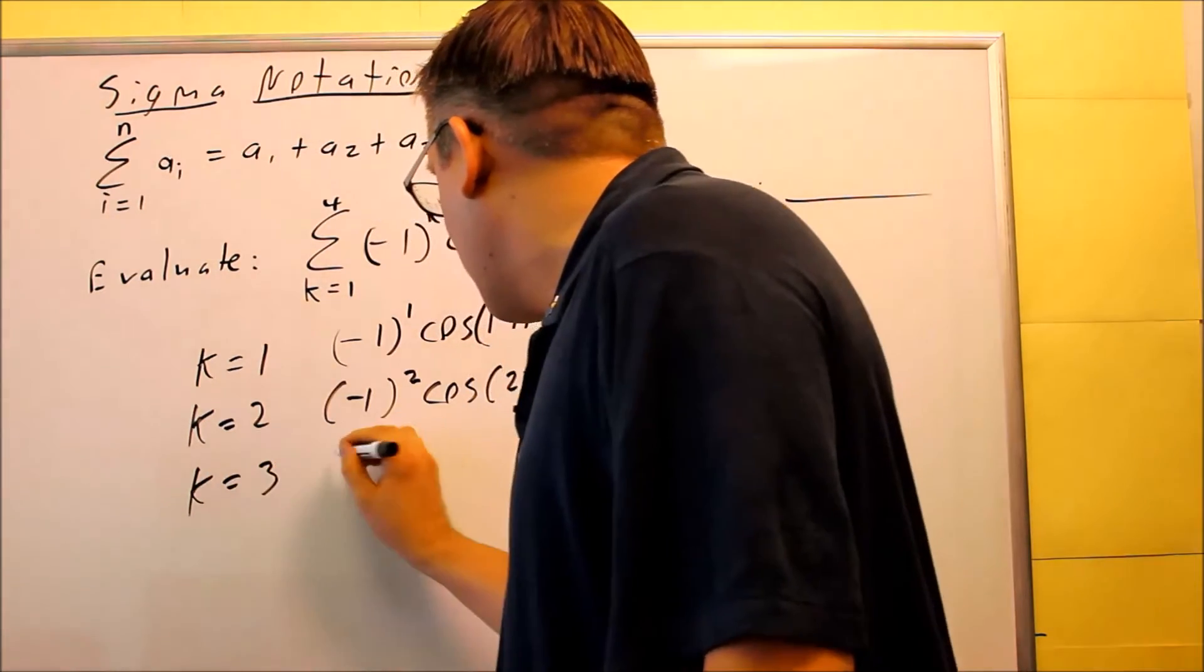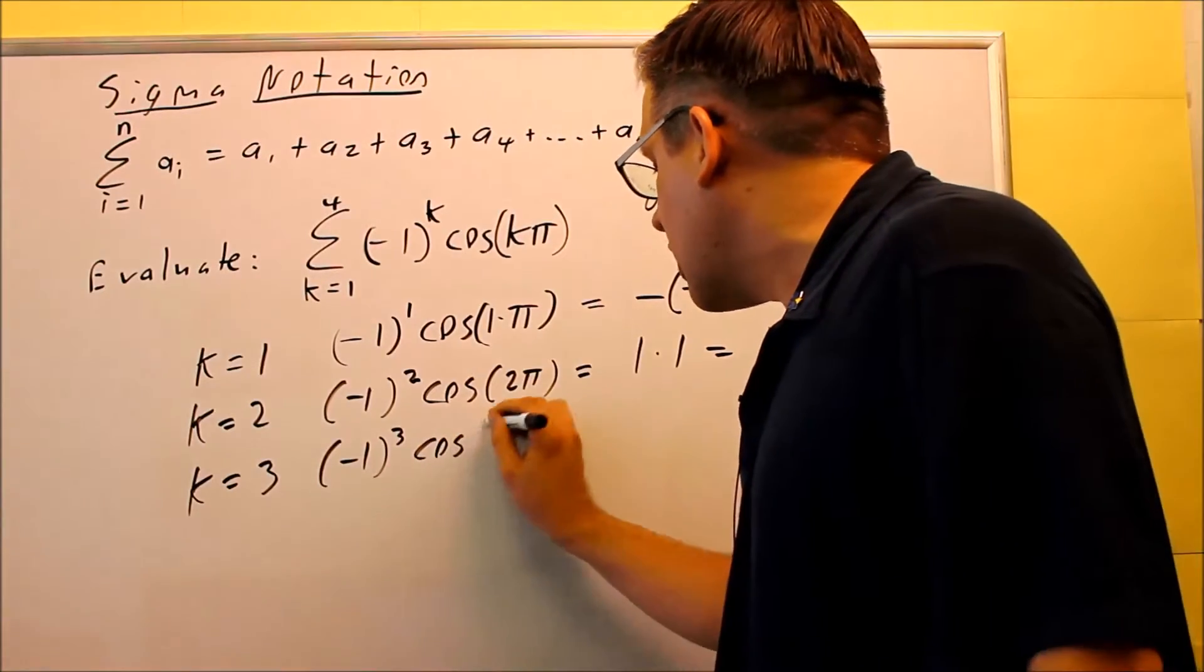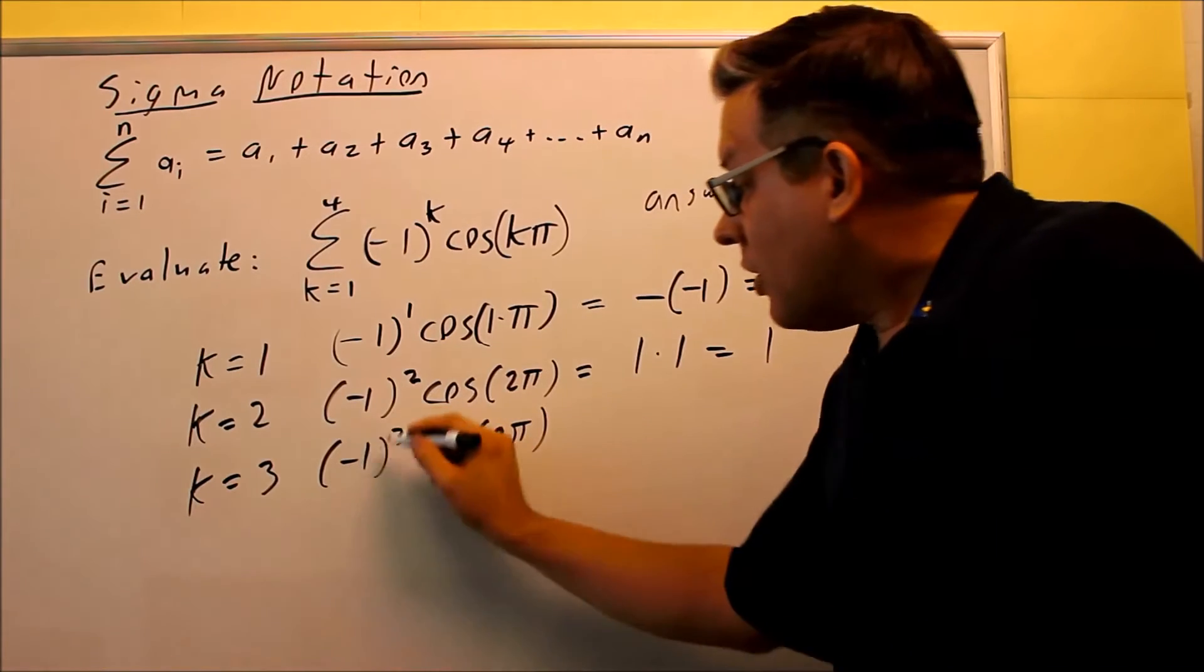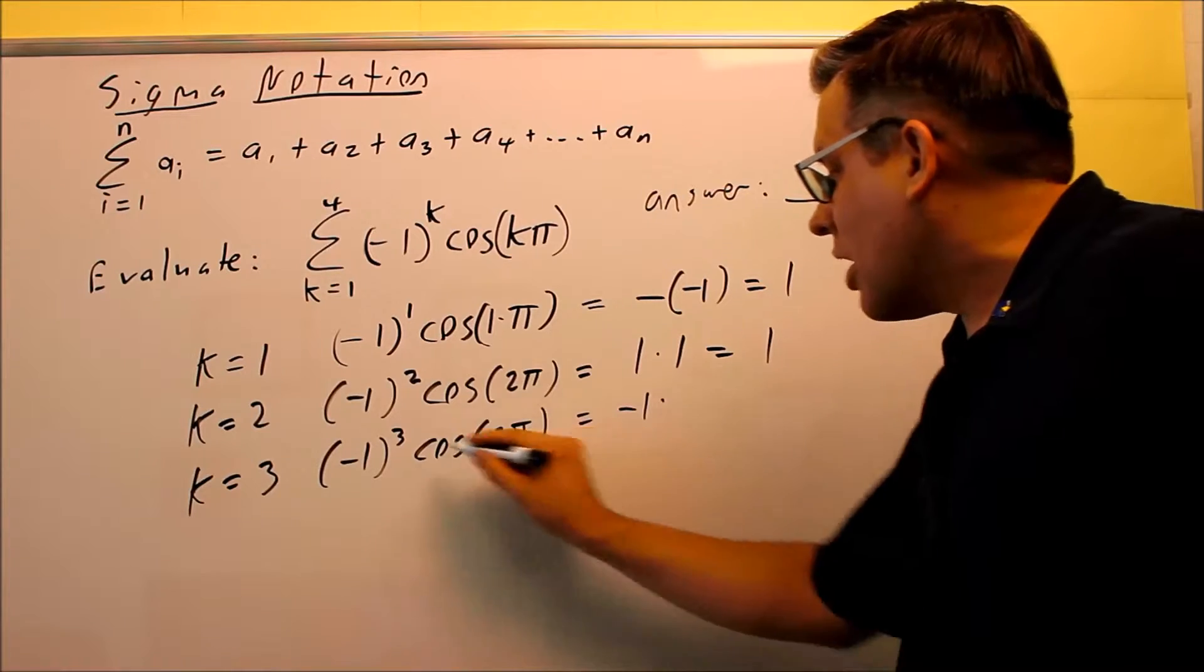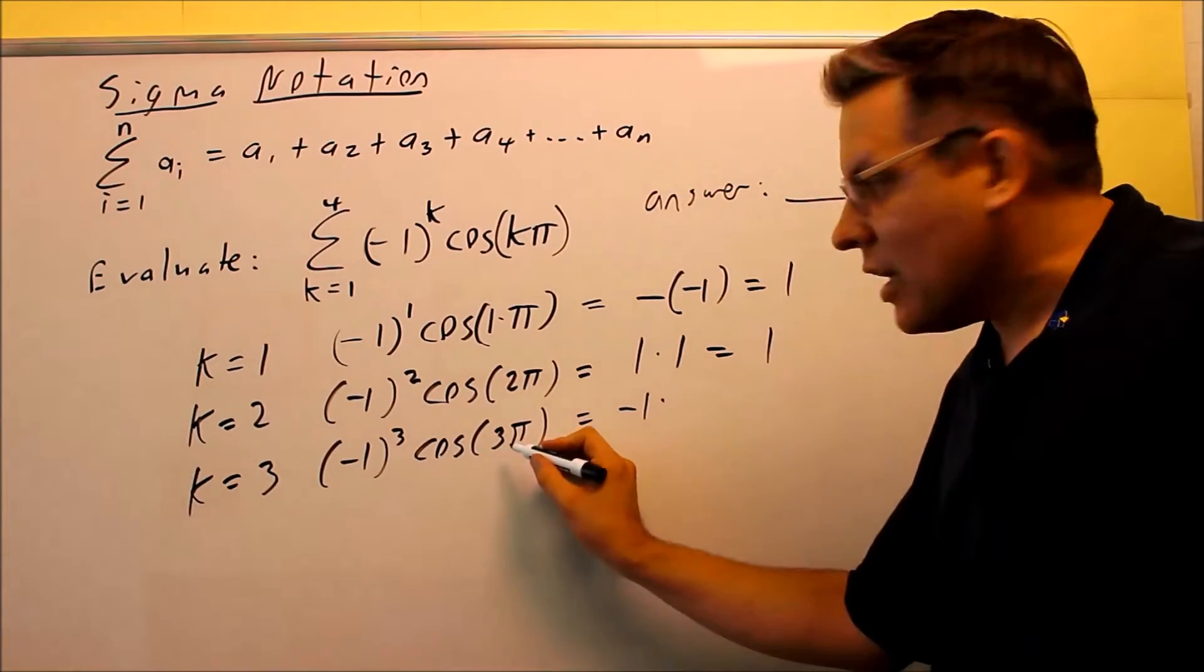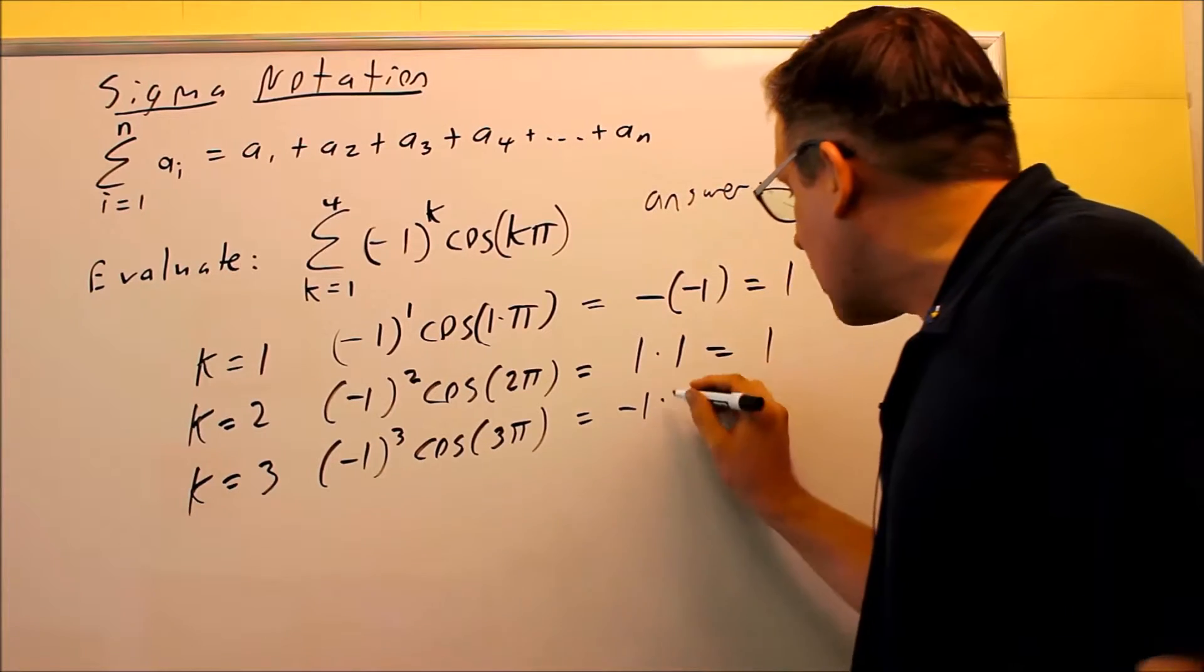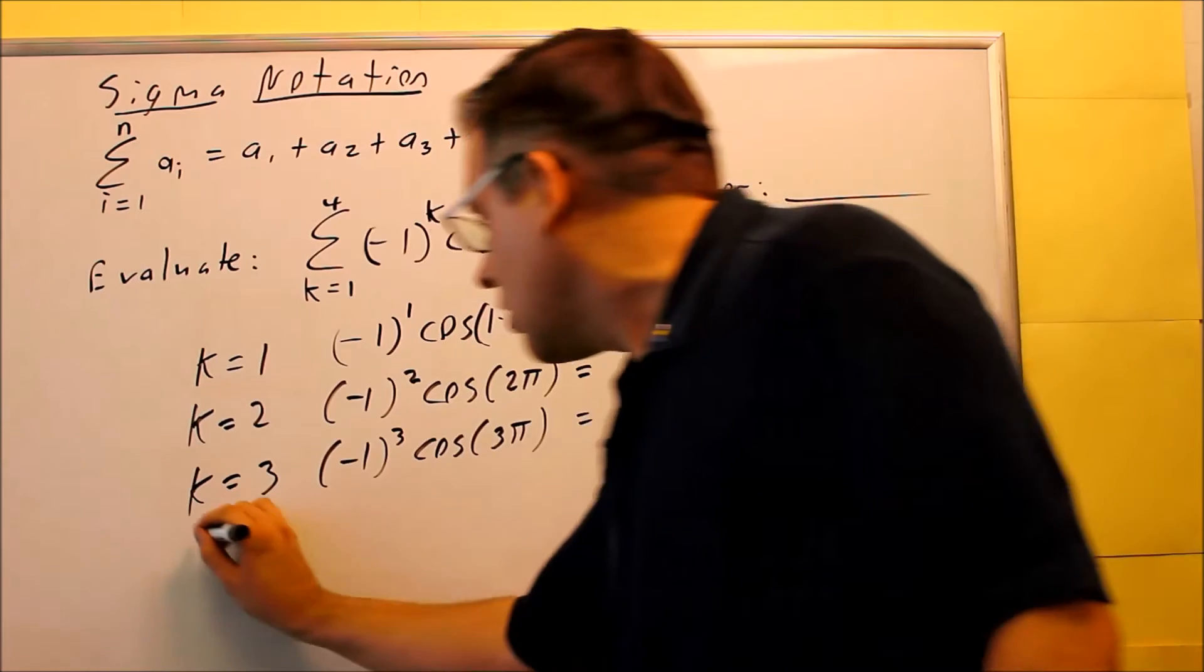k is equal to 3, we have negative 1 cubed, and then cosine of 3π. Negative to an odd power means you have a negative, so we have a negative 1 there. And then for this, cosine of 3π, if we subtract 2π from that, we're left with a cosine π. We know that's going to be negative 1 again, so we get positive 1 once again.